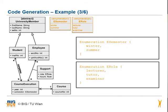The enumeration is written in a similar way as in the class diagram. The first word is the enumeration keyword followed by the name, then curved brackets around the possibilities. In our example, an enumeration called e-semester with the possibilities winter and summer, and an enumeration e-roll with the possibilities lecturer, tutor, or examiner.